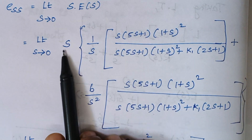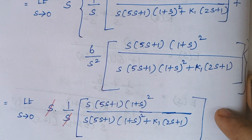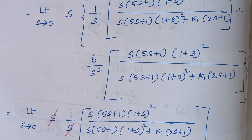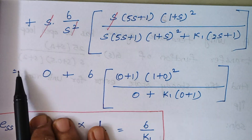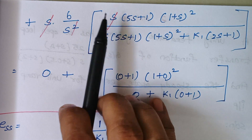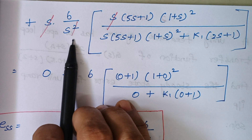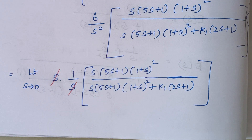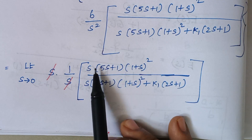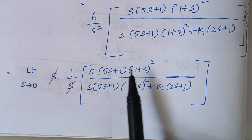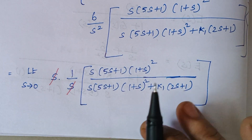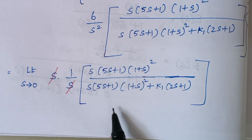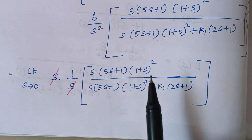Moving s inside each term: s·(1/s) — the s and s cancel each other. For the second term, s·(1/s²) gives 1/s, so the s² and s cancel. We then apply the limit s→0. Note: you cannot cancel the s terms here because the two terms are in addition, not multiplication — never make that mistake.